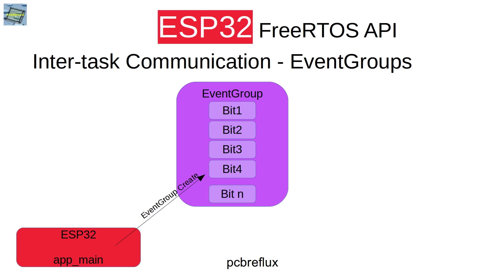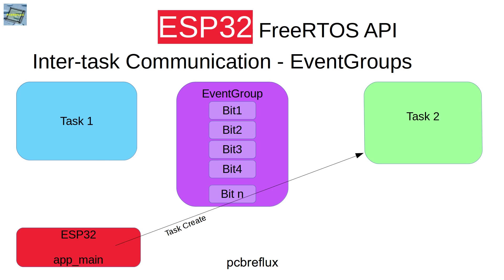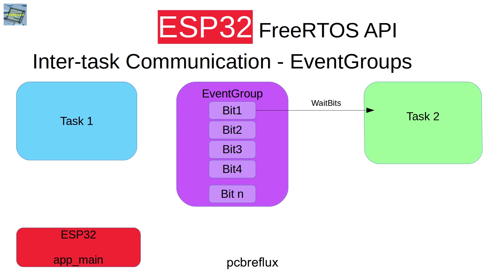When we create an event group, we can create it with either 8 bits or a larger one with 24 bits. As we see, there's no message we can store — we can only set or read the bits of an event group. If we start one task and a second task, one task can set one or more bits of the event group, and the other tasks can wait until one or more bits are set.